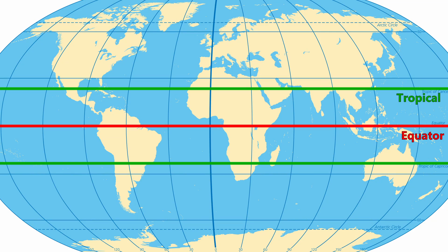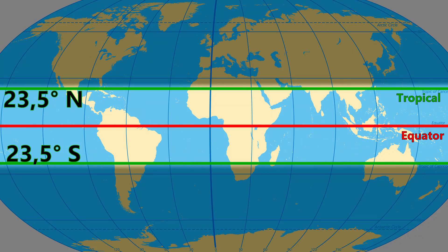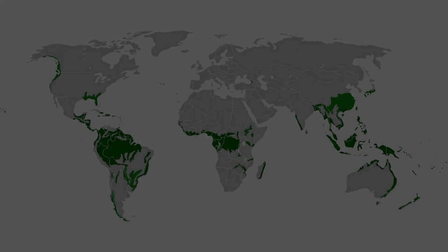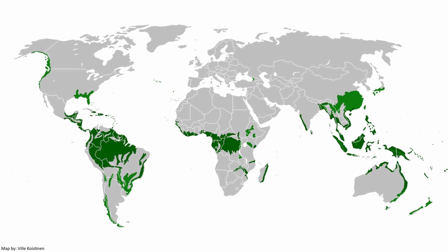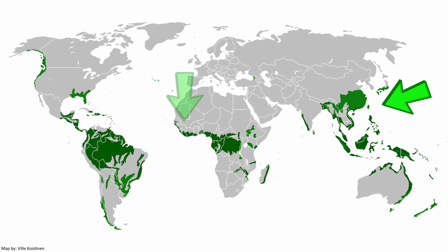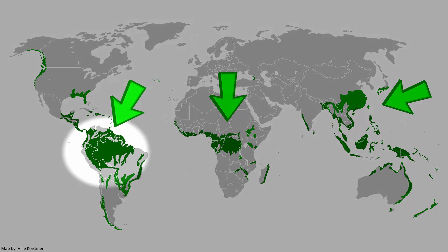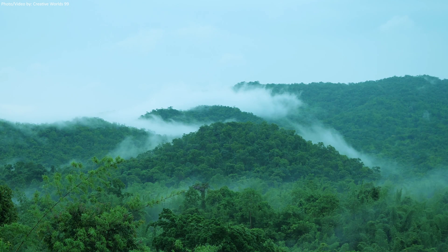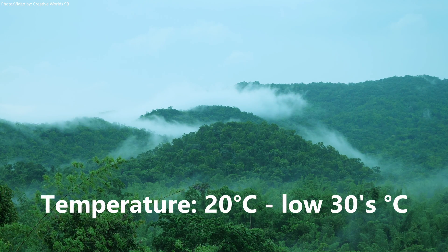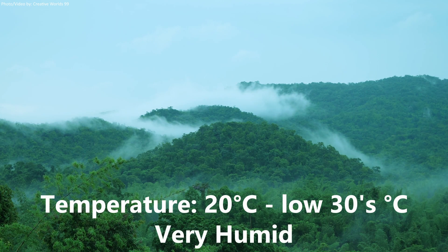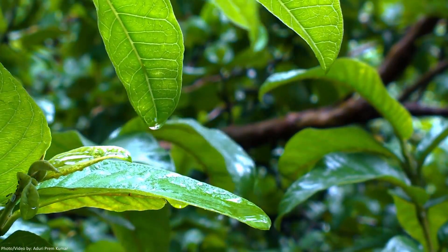Tropical forests can be found between the latitudes 23.5 north and 23.5 south. So they are most common in areas near the equator such as Southeast Asia, Sub-Saharan Africa and of course Central America, with the biggest rainforest, the Amazon. The temperatures stay somewhat stable throughout the year, ranging from 20 degrees Celsius to the low 30s. The humidity in these forests is extremely high and obviously it rains a lot.